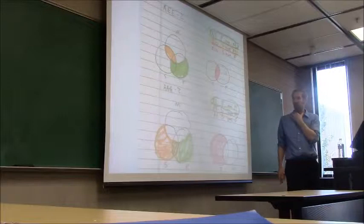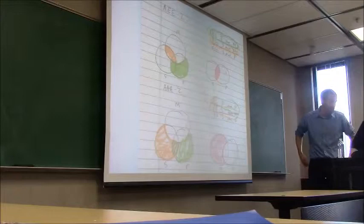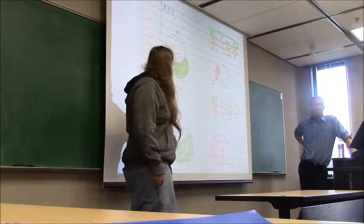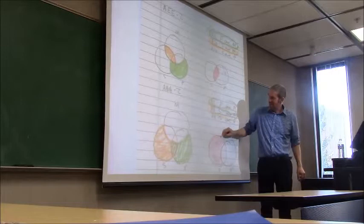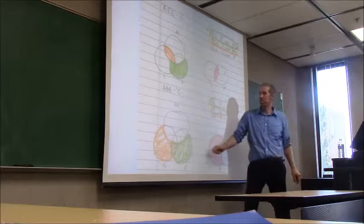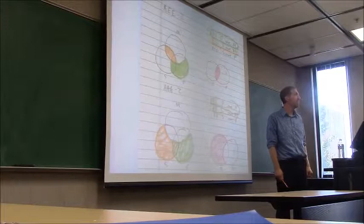Is this argument valid? No. The conclusion is saying that a certain region is shaded, but that region is not shaded in the premises diagram. For a valid argument, the information in the conclusion must be contained in the premises — but here it's not. So these premises do not guarantee this conclusion. It's an invalid argument.